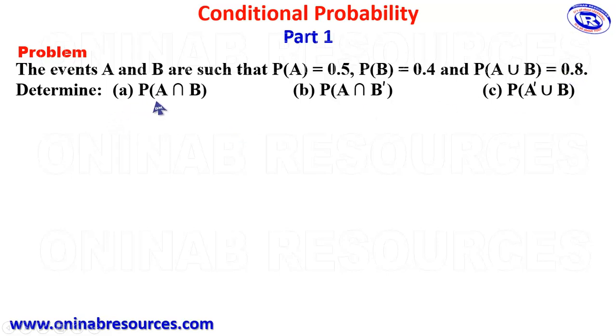Determine: A, P of A intersection B; B, P of A intersection B prime; and C, P of A prime union B.